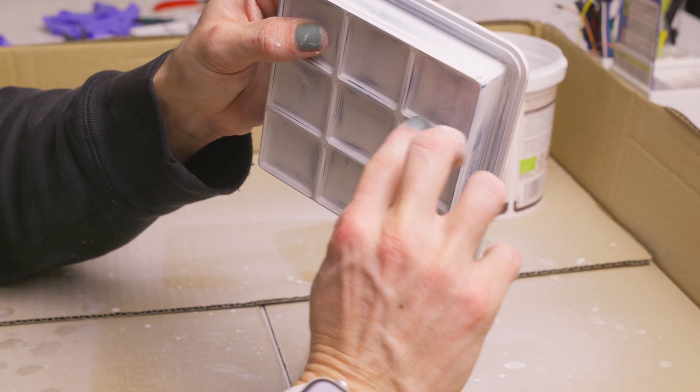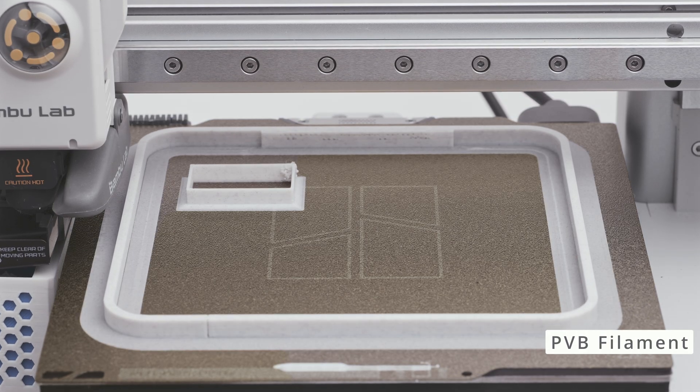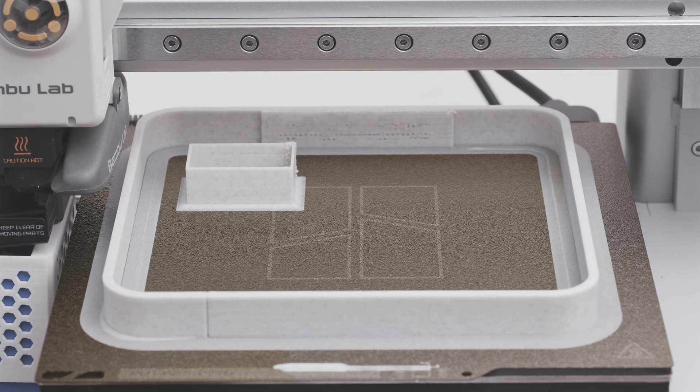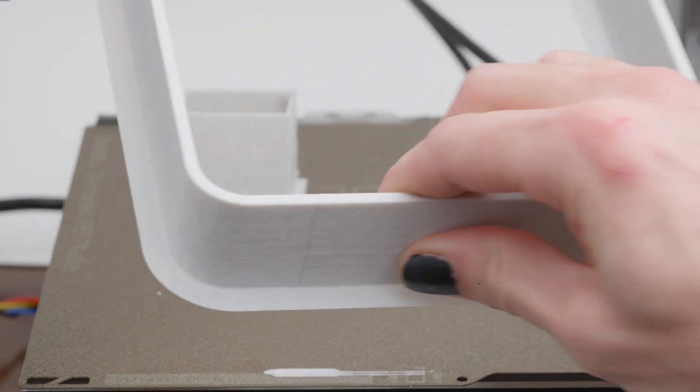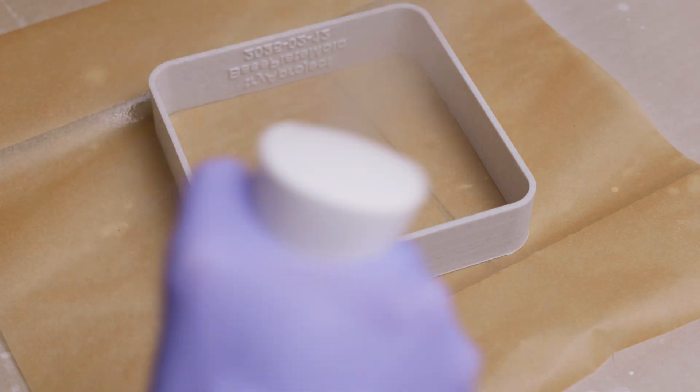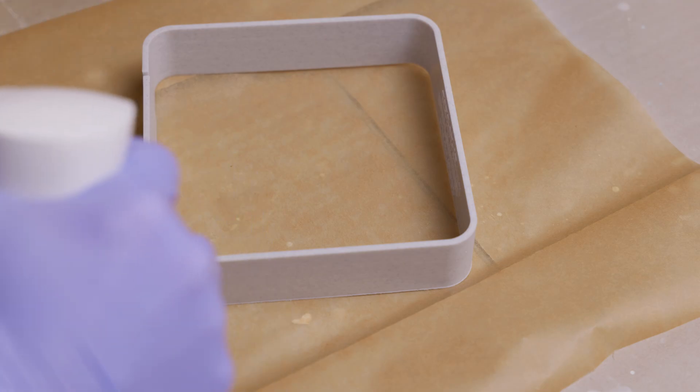If you don't want to do all this, you can print in a material like PVB, which I did for the walls, and then just spritz it with IPA and you get a nice smooth finish. You will be left with some evidence of layer lines, but honestly it looks pretty good.